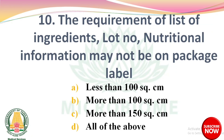Question 9: The requirement of list of ingredients, lot number, and nutritional information may not be on the package label — options: less than 100 square centimetres, more than 100 square centimetres, more than 150 square centimetres, all of the above. The right answer: option A, less than 100 square centimetres.